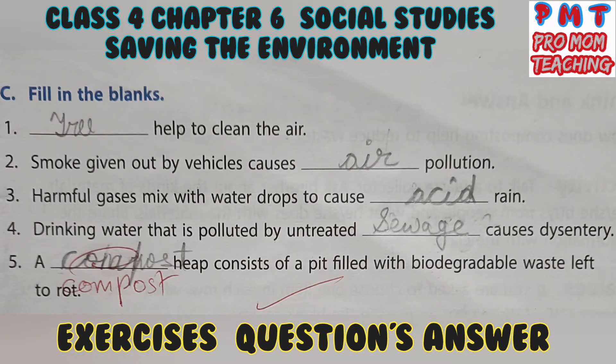Fill in the blanks. First, trees help to clean the air. Second, smoke given out by vehicles causes air pollution. Third, harmful gases mixed with water drops cause acid rain. Fourth, drinking water that is polluted by untreated sewage causes dysentery. Fifth, a compost heap consists of a pit filled with biodegradable waste left to rot.